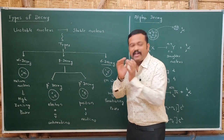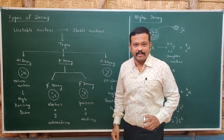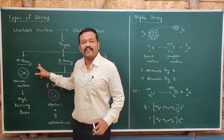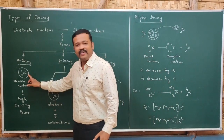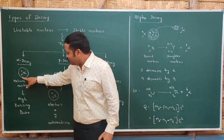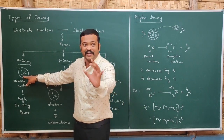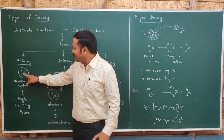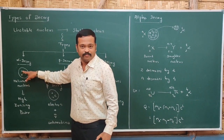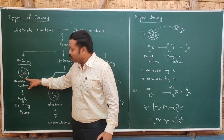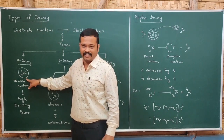If from an unstable nucleus an alpha particle is emitted, then that decay is called alpha decay. What is an alpha particle? It is a particle which consists of two protons and two neutrons. It is similar to a helium nucleus. That is why we denote alpha as having atomic number 2 and mass number 4. If this particle is emitted, the decay is called alpha decay.